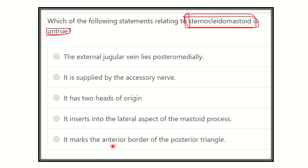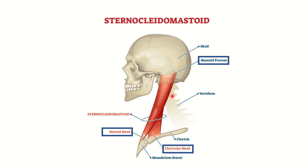The sternocleidomastoid muscle originates from two places: the manubrium sterni and the clavicle. This gives it two heads — the sternal head and the clavicular head. From these origins, the muscle ascends upwards and is finally inserted into the lateral aspect of the mastoid process.